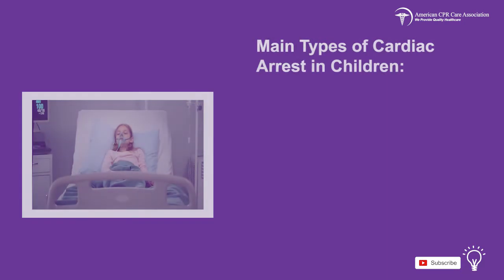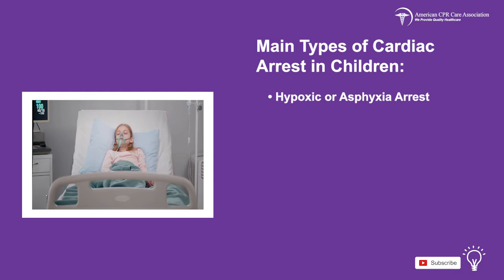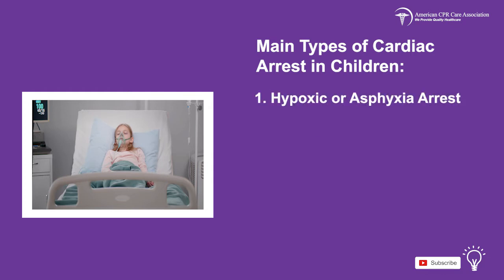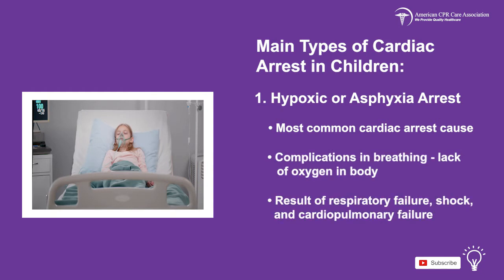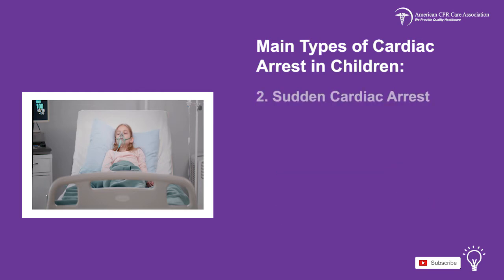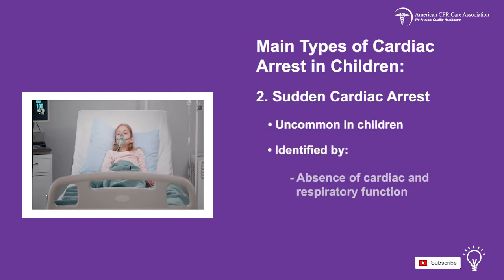There are two main types of cardiac arrest that present in children: hypoxic or asphyxia arrest, and sudden cardiac arrest. Asphyxia arrest is the most common cause of cardiac arrest in children and occurs when there is a lack of oxygen in the body, resulting from complications in breathing caused by respiratory failure, shock, and cardiopulmonary failure. Sudden cardiac arrest, however, is not common in children and is identified by the absence of cardiac and respiratory function, or by the arrest rhythm on the cardiac monitor.